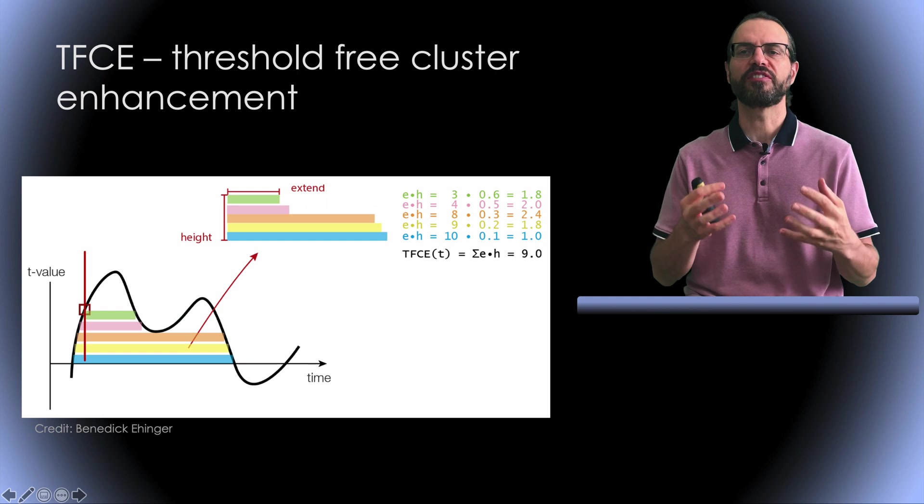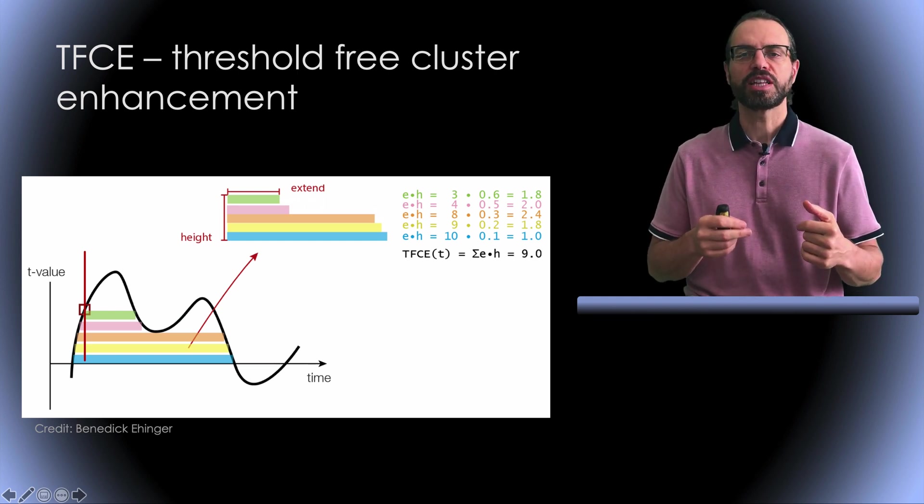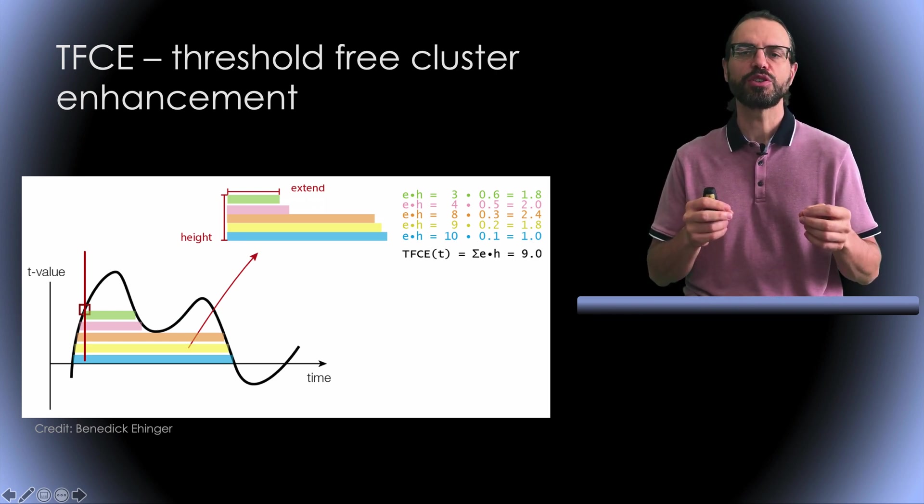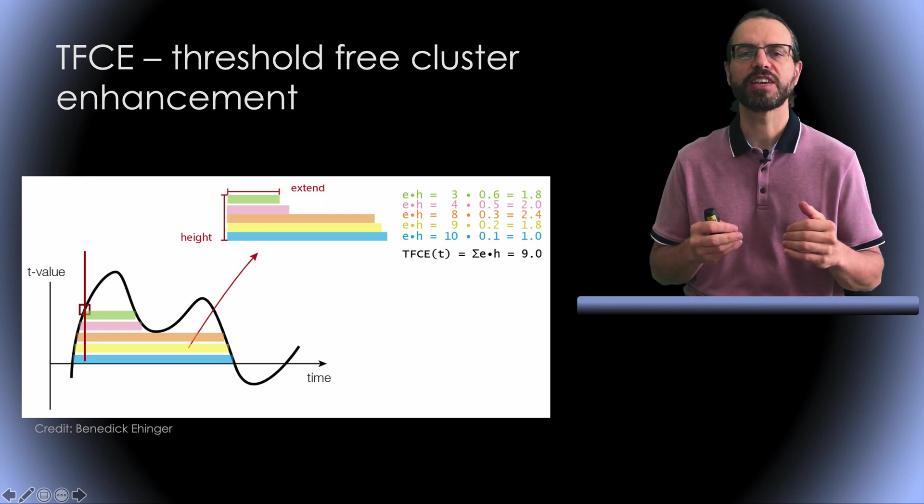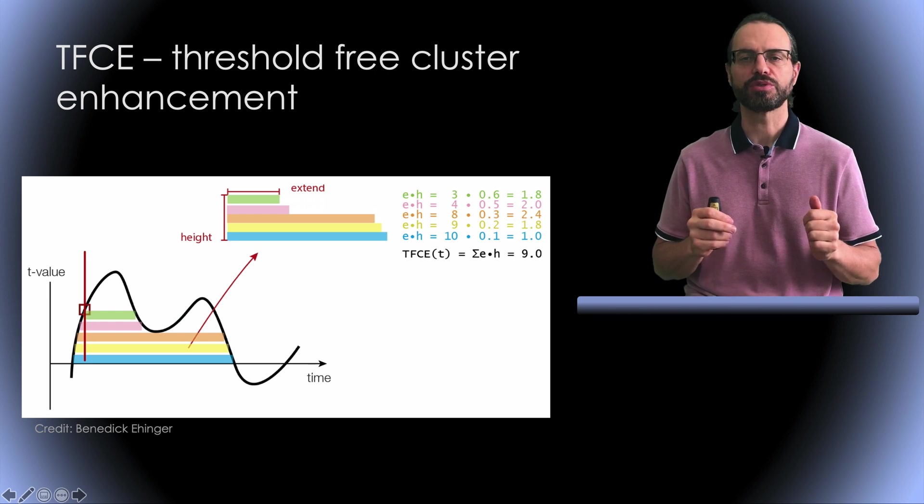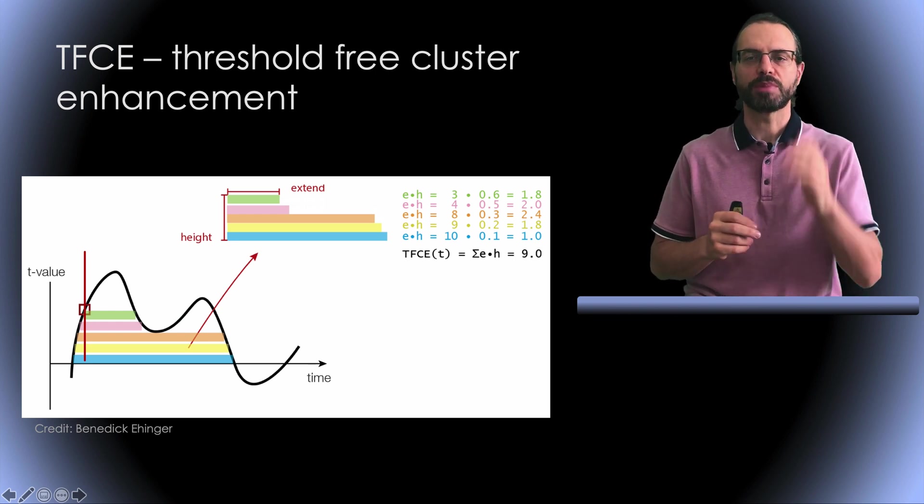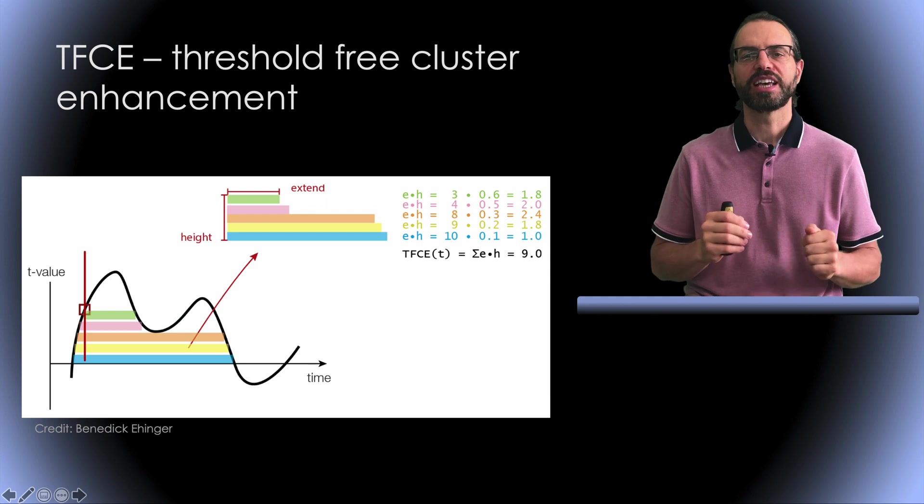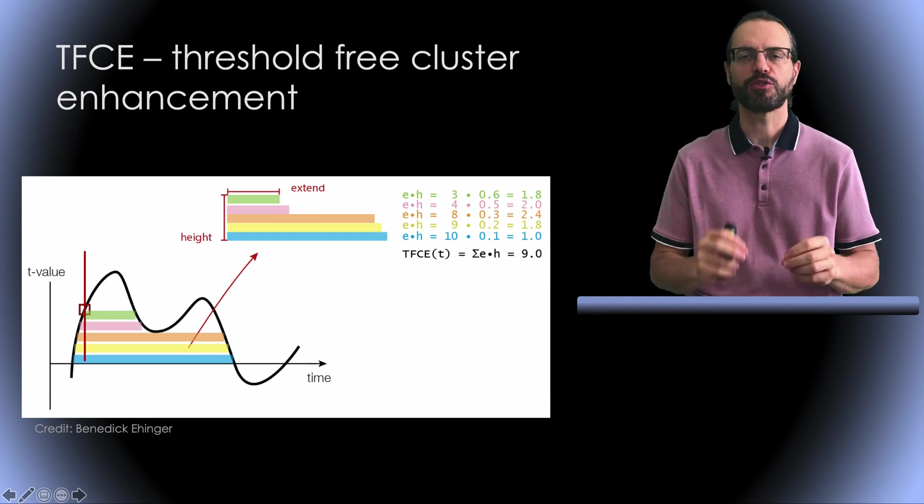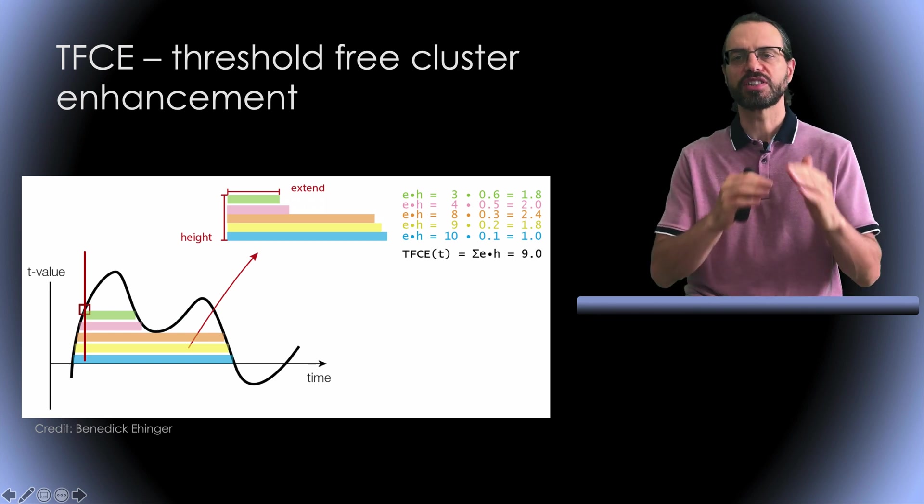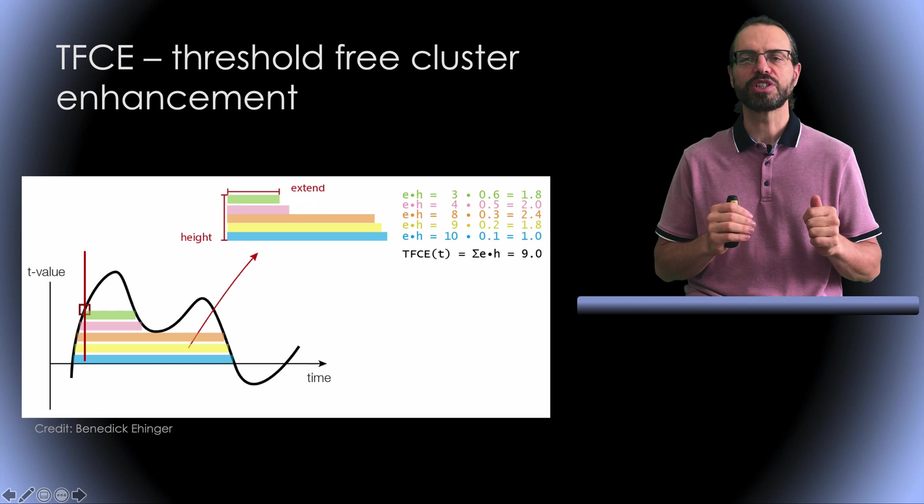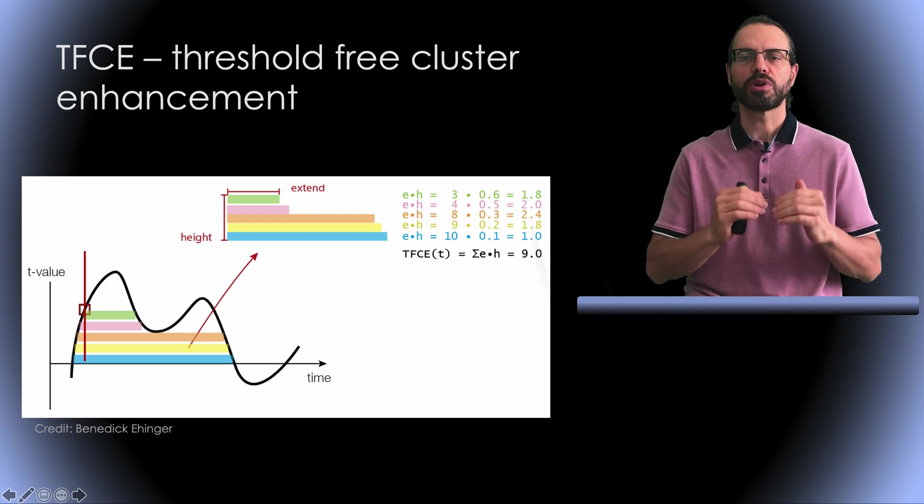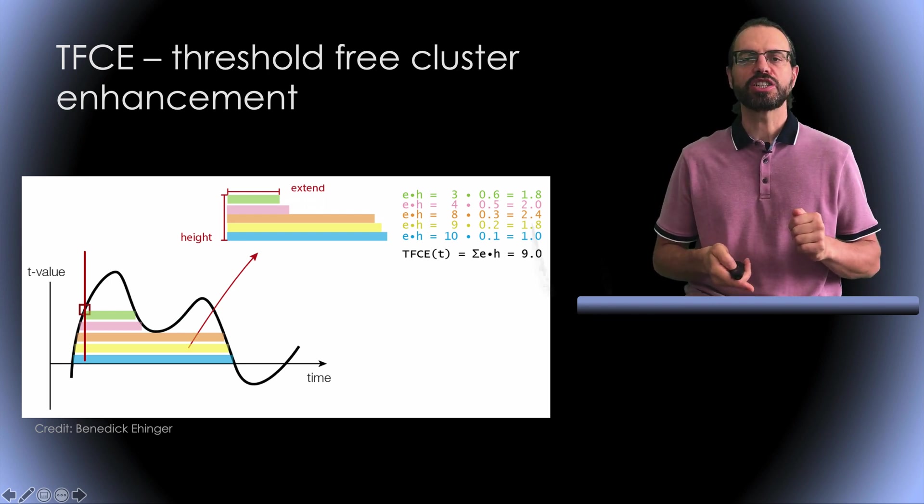Let's look at the threshold-free cluster enhancement method, which is yet another type of max-t method. Here is a one-dimensional example. In this method, we will not use the raw statistics as in the max-t method, but instead use the value enhanced by the level of significance and extent of the region they belong to. At a given time, here represented by the vertical red line, we scan different statistical thresholds, here represented in different colors, and we calculate regions of significance for that threshold. Then we calculate the product of the statistical threshold and the extent of the region of significance. We can do that for multiple thresholds, and we sum these products across all thresholds. Let's look at an animation at two different times.